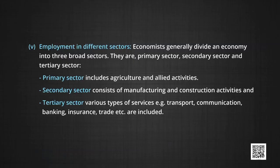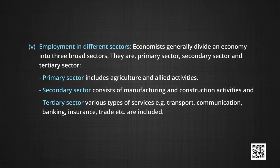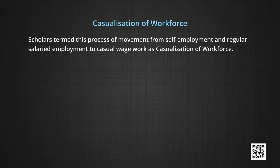Now we discuss employment in different sectors. Economists generally divide an economy into three broad sectors: primary sector, secondary sector, and tertiary sector. The primary sector includes agriculture and allied activities — in other words, all activities where exploitation of nature is required. The secondary sector consists of manufacturing and construction activities. The tertiary sector includes various types of services such as transport, communication, banking, insurance, and trade. Over the last four decades, there has been a considerable shift of workforce from self-employed and regular salaried employment to casual wage work. Scholars termed this process as the casualization of the workforce.